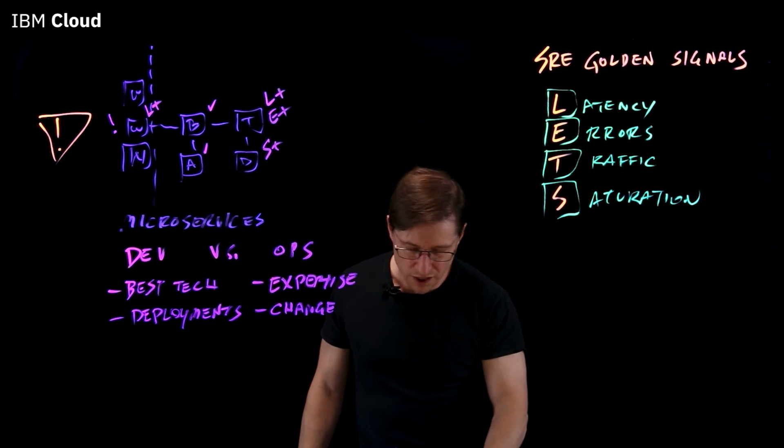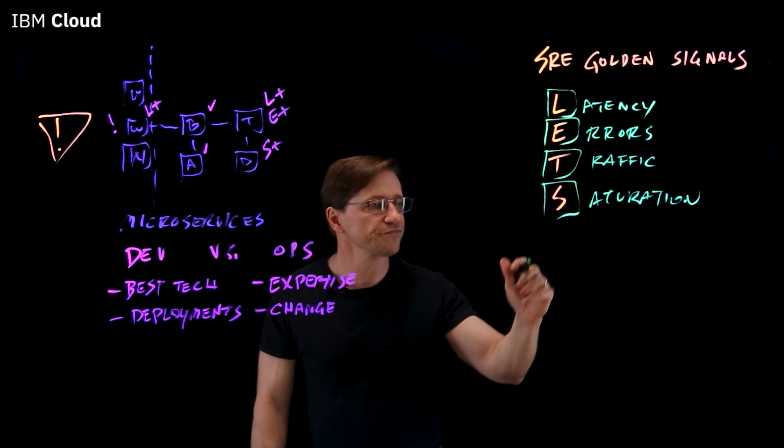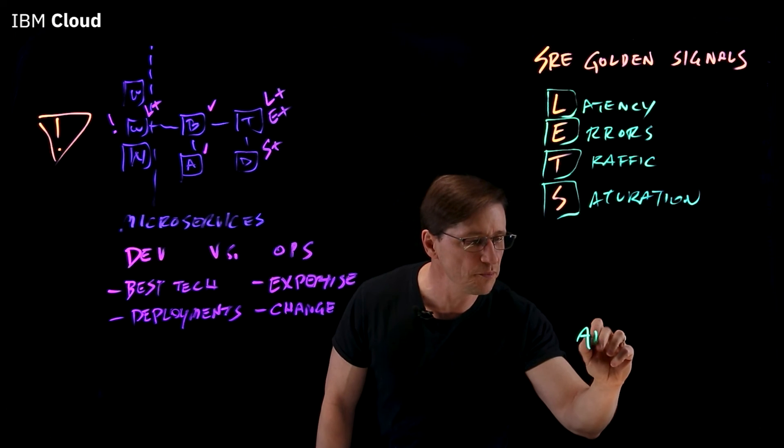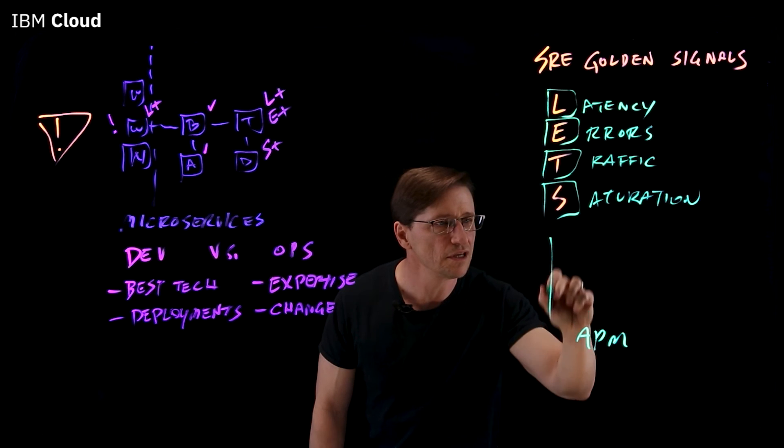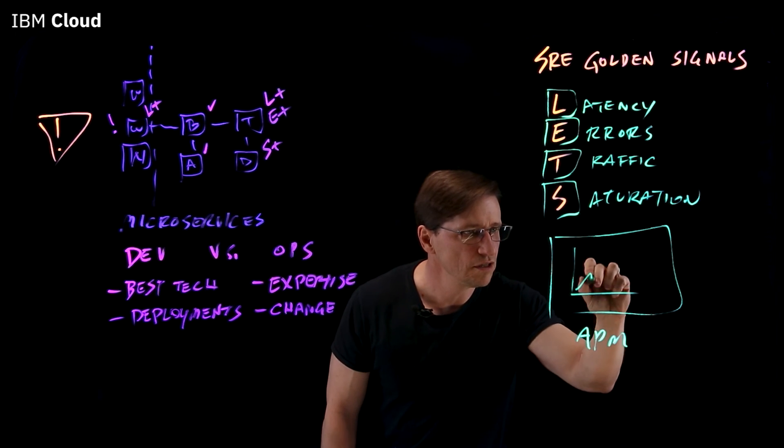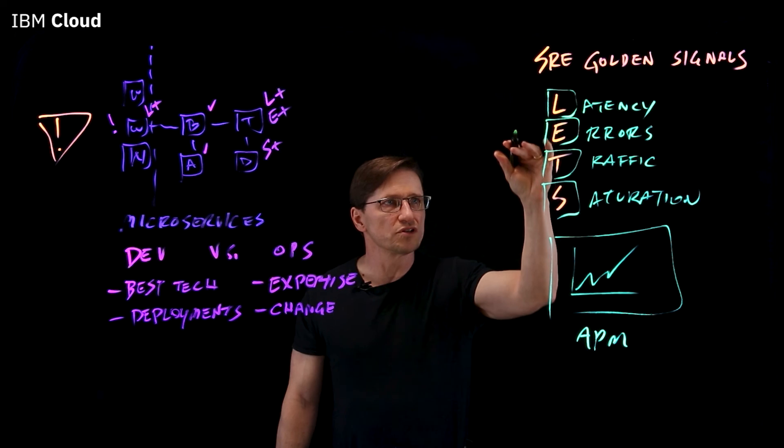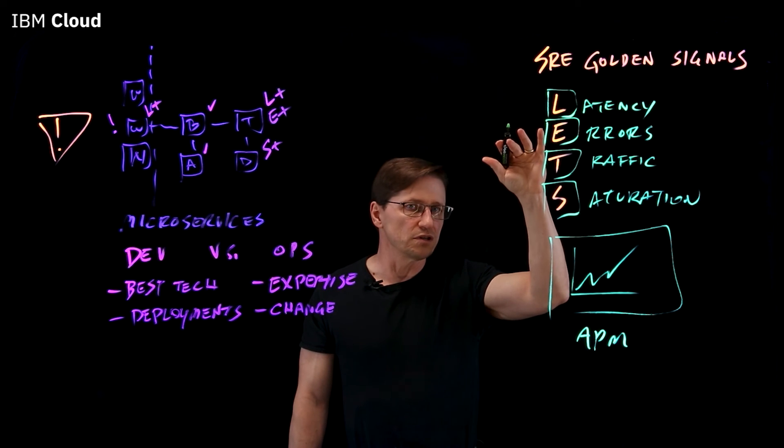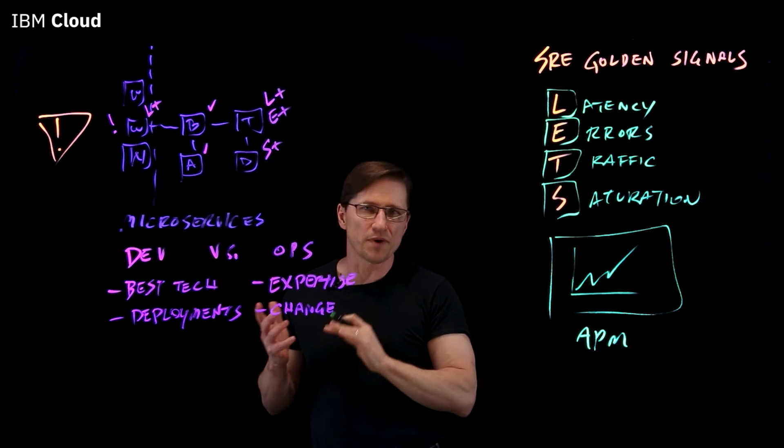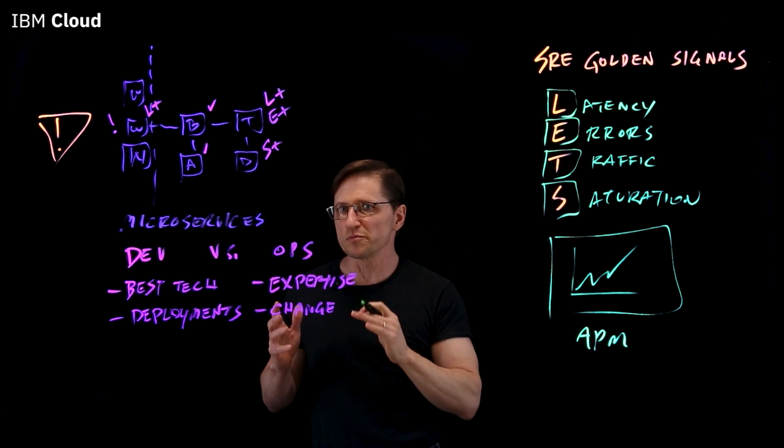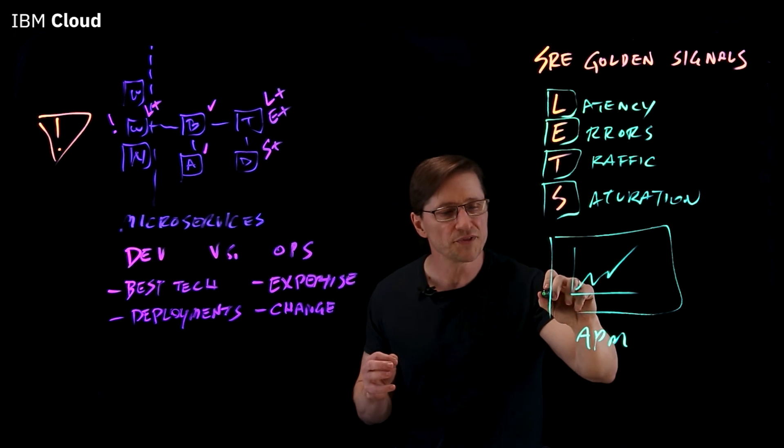But to do that in a more organized fashion, you can use what's called an APM dashboard, or Application Program Management. That dashboard includes views that encapsulate the four SRE golden signals. The ops team can use that to monitor problems and be able to address them before they become more serious, but they're not limited to that.